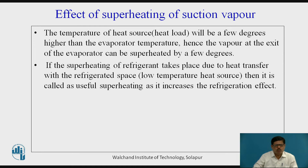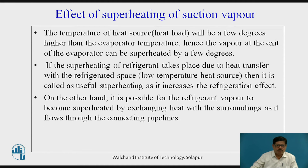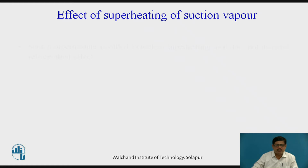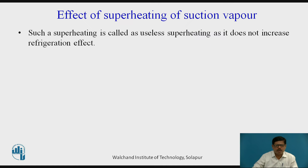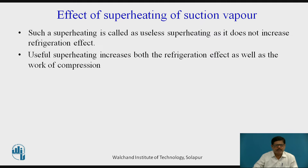It is important to note that if the superheating of refrigerant takes place due to heat transfer with the refrigerator space — that is, inside the evaporator — then it is called useful superheating, because it increases the refrigeration effect, as seen on the TS diagram as well as the PH diagram. But if the refrigerant vapor gets superheated by exchanging heat with the surroundings outside the evaporator — that is, in the connecting pipeline going to the compressor — then this superheating is of no use. Such superheating is called useless superheating, because it does not increase refrigeration effect. Useful superheating increases both refrigeration effect and work of compression.